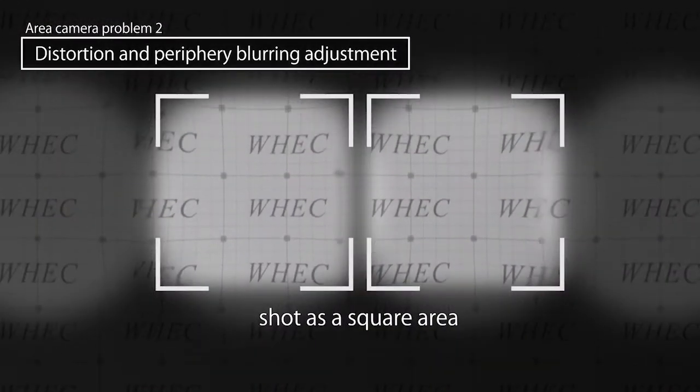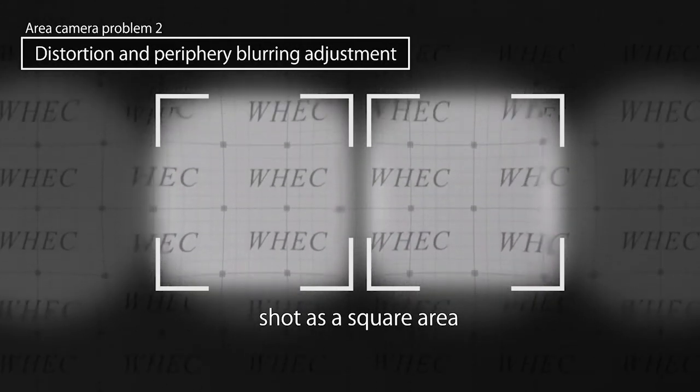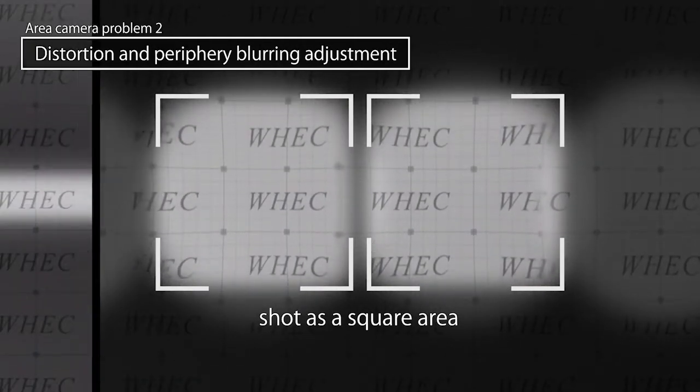Area cameras image inspected items in square regions, so they are not suited for continuous processing. CIS, on the other hand, scan in lines, making them perfect for continuous processing.